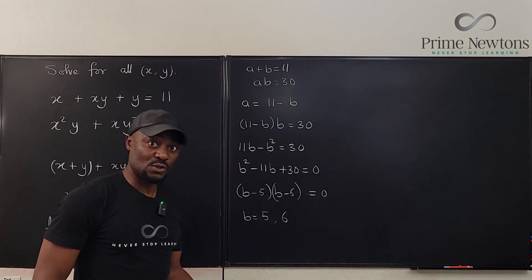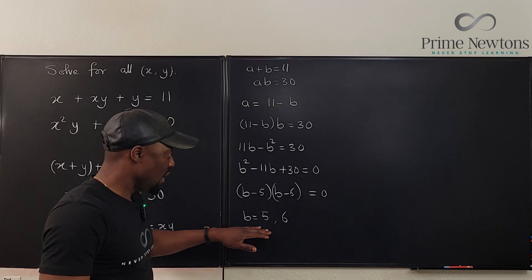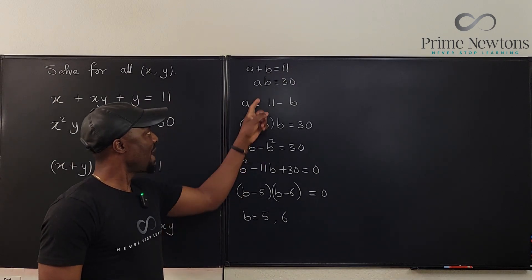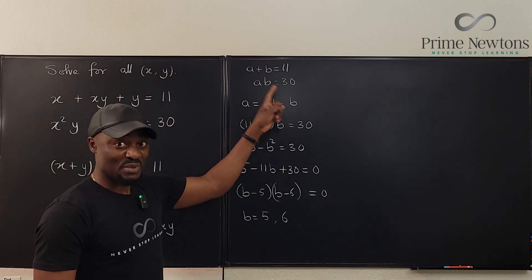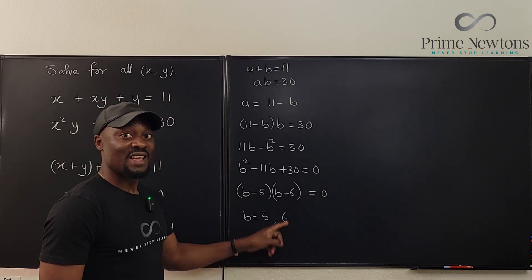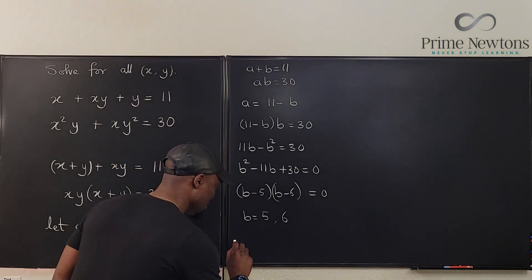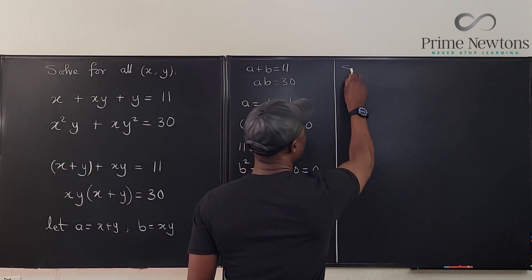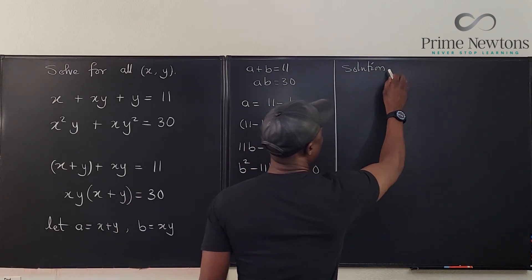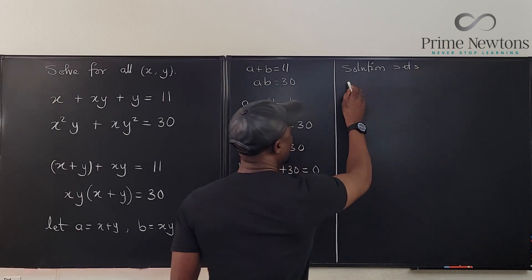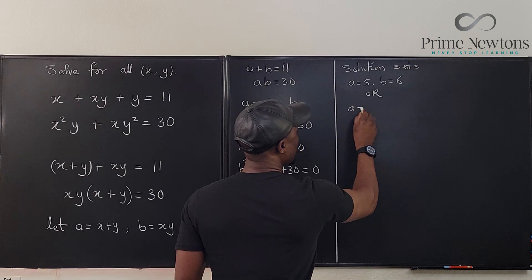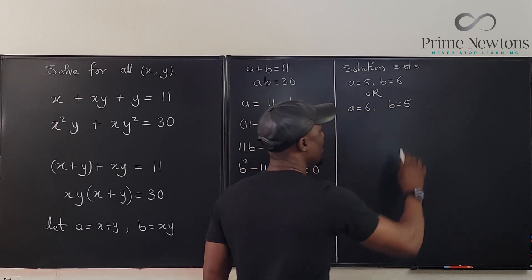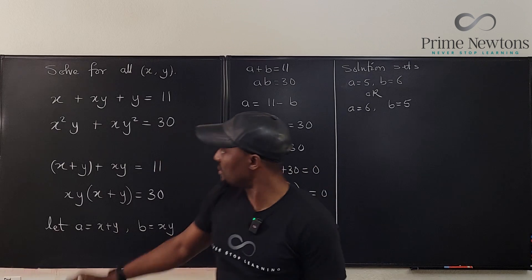And then you get b equals 5 and b equals 6 as your two solutions. So we clearly know when b is equal to 5, when b equals 5 what would a be? a would be 6. And when b equals 6, a will be 5. So we know that solution sets are a equals 5, b equals 6, or a equals 6, b equals 5. By the way, remember this is not what we're looking for. We're looking to find x and y combinations.